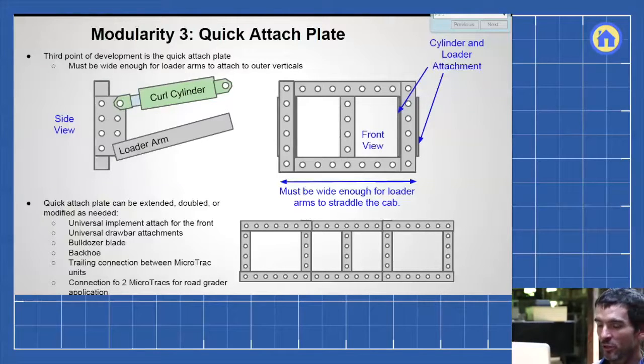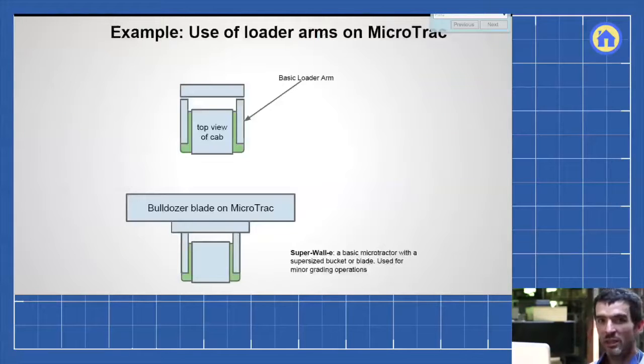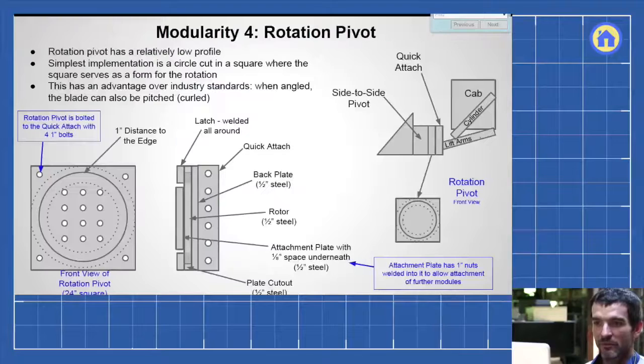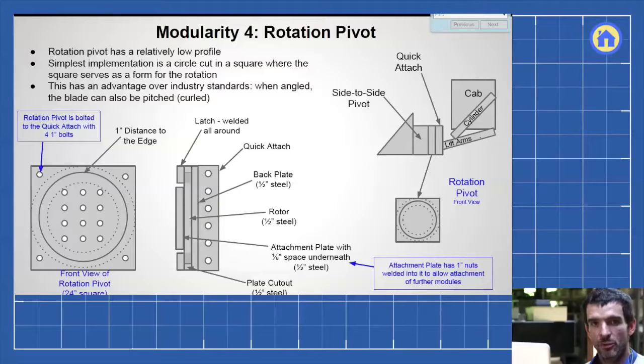Now we talk about a universal quick attach plate to which any heavy implement can be attached, including connecting to another bulldozer, to make it a 2 bulldozer unit, like a trained operation. And we go from there, from the ability to attach any module on the quick attach to things like a bulldozer blade.